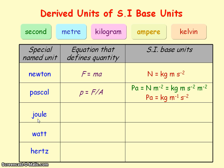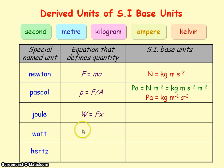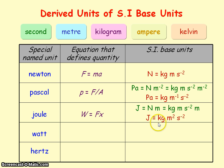The joule is the unit for work done, and work done equals force times distance moved in the direction of force. So the joule is equal to the units of force — newtons — multiplied by the units of distance — meters — giving newton meters. To get it into SI base units, we substitute for the newton, so the joule is equal to kg meters squared per second squared.